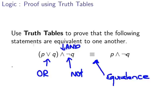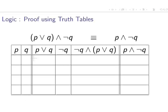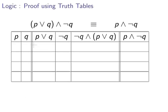So p or q and not q is equivalent to p and not q. We're going to use truth tables to perform this calculation here. Now we have the truth table set up here.